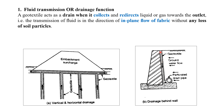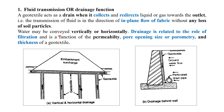Here you can also see drainage behind a retaining wall. The geotextile has been inserted behind the retaining wall and there is a drain. Whatever water is coming horizontally goes down vertically and then moves further through the drain. Water may be conveyed vertically or horizontally. Drainage is related to the role of filtration and is a function of permeability, pore spacing, pore opening size or porometry, and thickness of the geotextile.